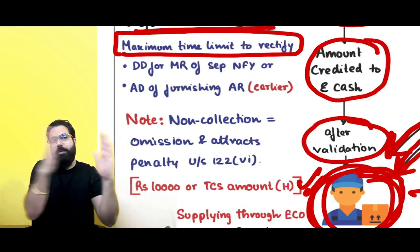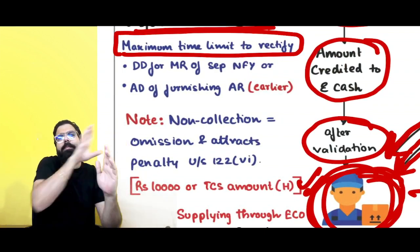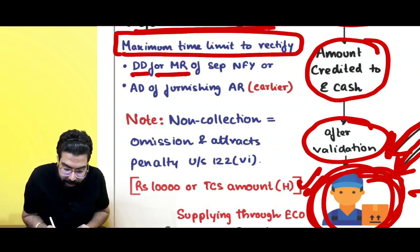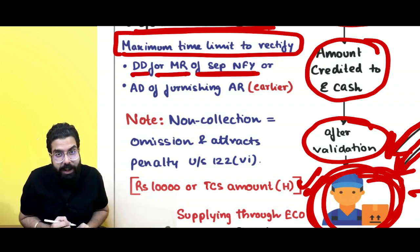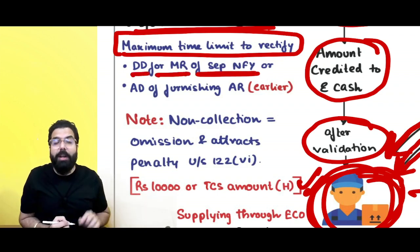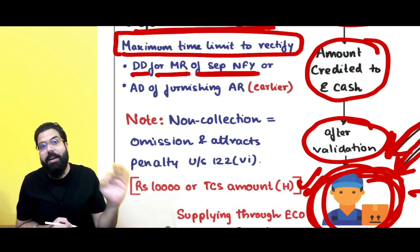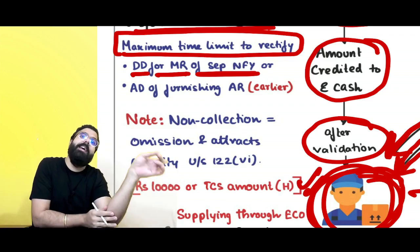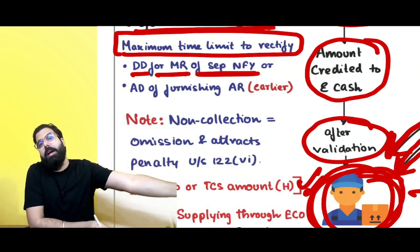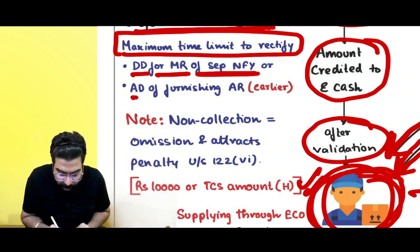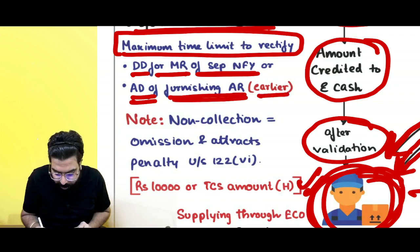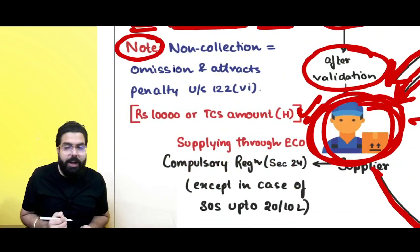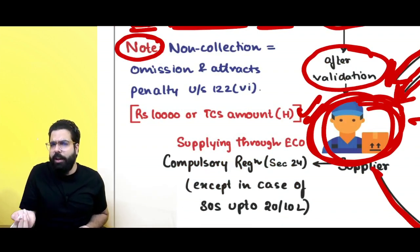What is the maximum time limit to rectify with respect to a financial year? The e-commerce operator can go ahead and rectify up to the due date of the monthly return of September of the next financial year — that is, whatever is the due date of GSTR-8 for that month — or the actual date of furnishing the annual return, whichever is earlier.